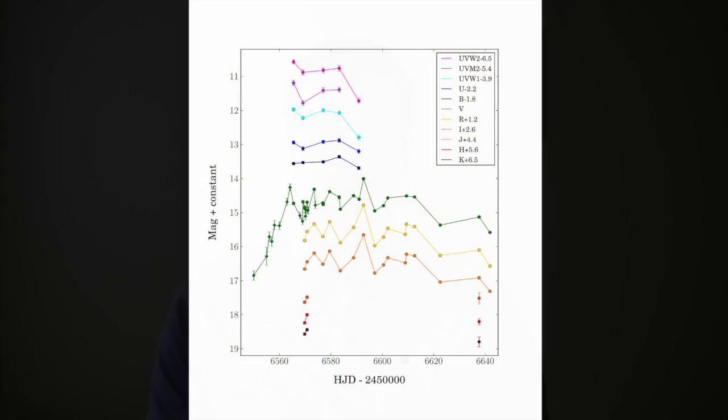These observations spanned about 3 months after the detection of the outburst, and we used the photometric data to construct a light curve, which you see here. The light curve indicates that ASASSIN 13dB has continued to show an increased level of emission in all observed bands throughout the period of observation, never dropping below a V-band magnitude of roughly 15.8.